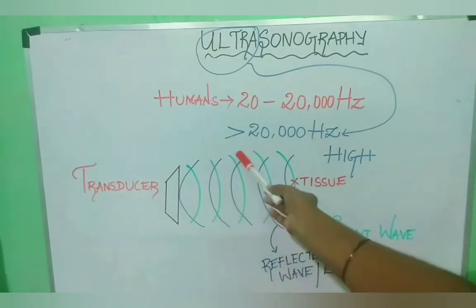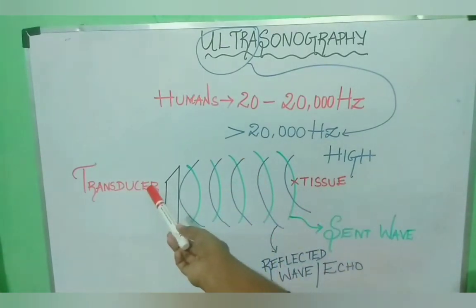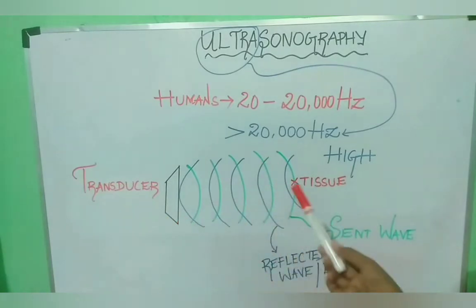Sound waves are transmitted into the tissue or human body using a transducer probe and the reflected sound waves, these blue colored lines or returning echoes, are collected to form an image of a structure.